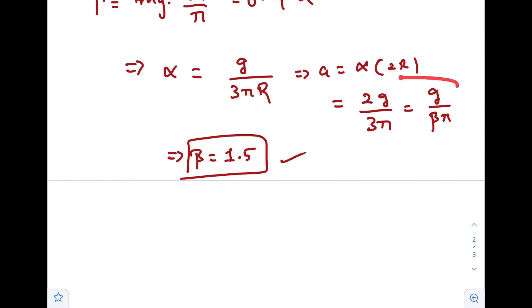So this is the linear acceleration. Now we need to find out the beta, so beta is 3 by 2, that is 1.5. Very easy. Anyways, I thought it would have been a difficult one, but I will try to solve a more difficult question in the next video.